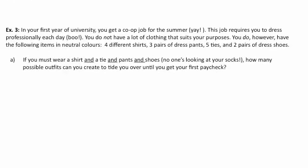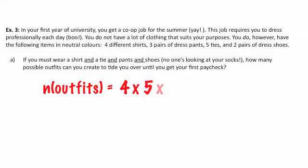Here's example three. In your first year of university, you get a co-op job for the summer that requires you to dress professionally each day. You have four different shirts, three pairs of dress pants, five ties, and two pairs of dress shoes. If you must wear a shirt, tie, pants, and shoes, how many possible outfits can you create? The number of outfits equals four shirts times five ties times three pants times two shoes, which gives us 120 total outfits.